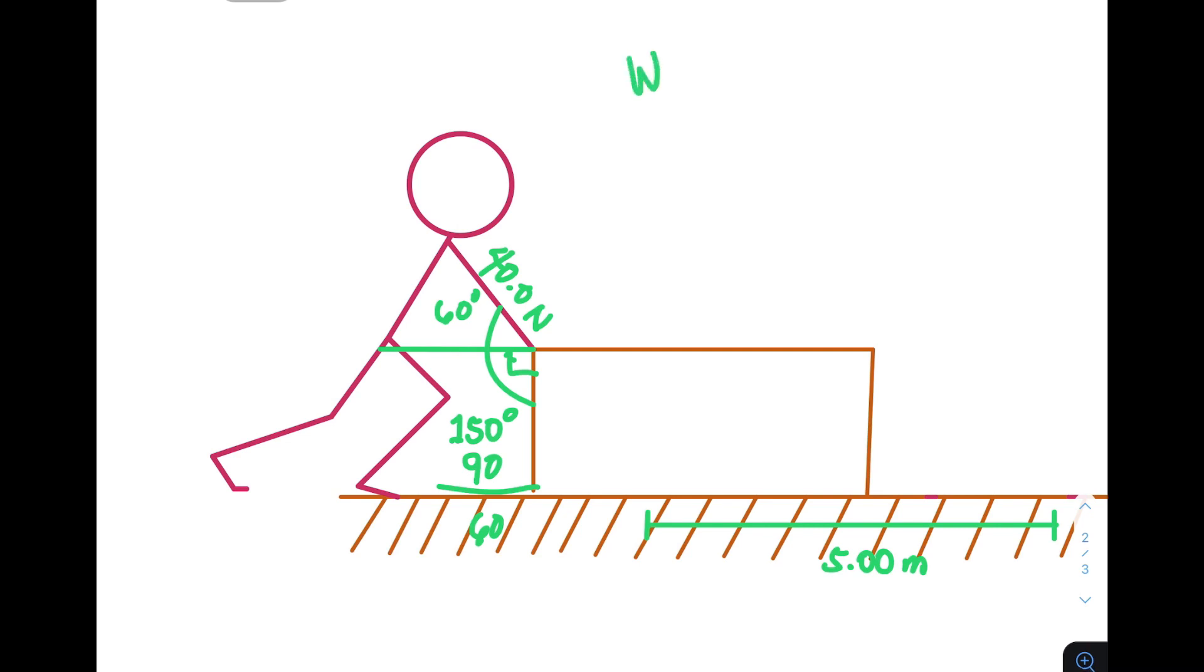And then we adopt the same formula, work is equals to force cosine theta times the distance. Substitute the values, and we have here 40.0 newtons times cosine 60 times the distance of 5 meters. And that would be 100 newton meters or 100 joules.